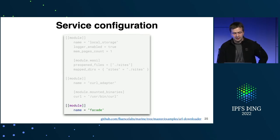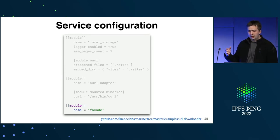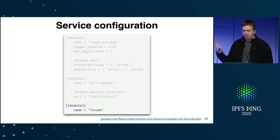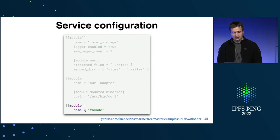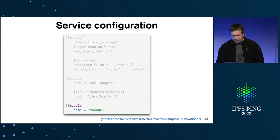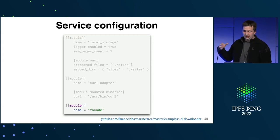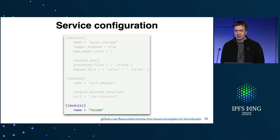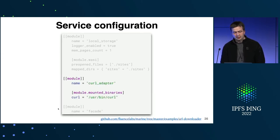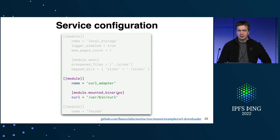Marine can load several modules, combine them into services, and provide a way to call those services from an external API. Here you can see the service configuration — basically a TOML file. Let's consider a service containing three modules. The first module is the facade. The next is a curl adapter; here you specify the name and a section called mounted binaries, which is our interface to external binaries. This line allows a module to call a binary located at a given path.